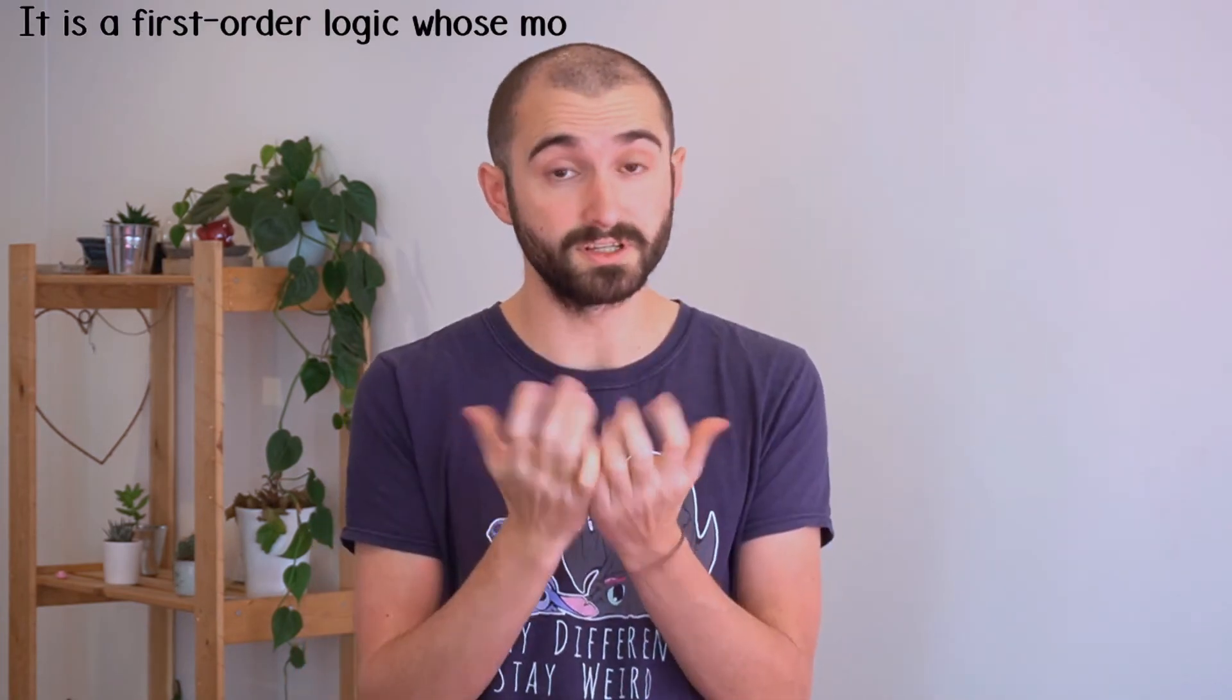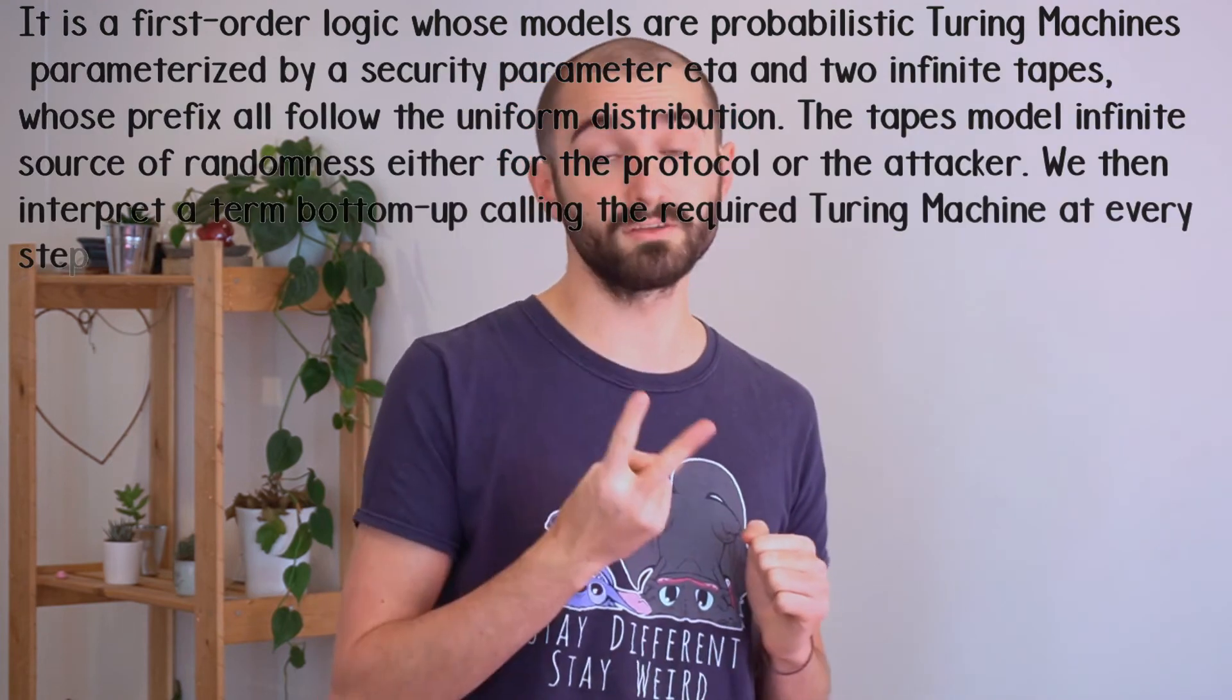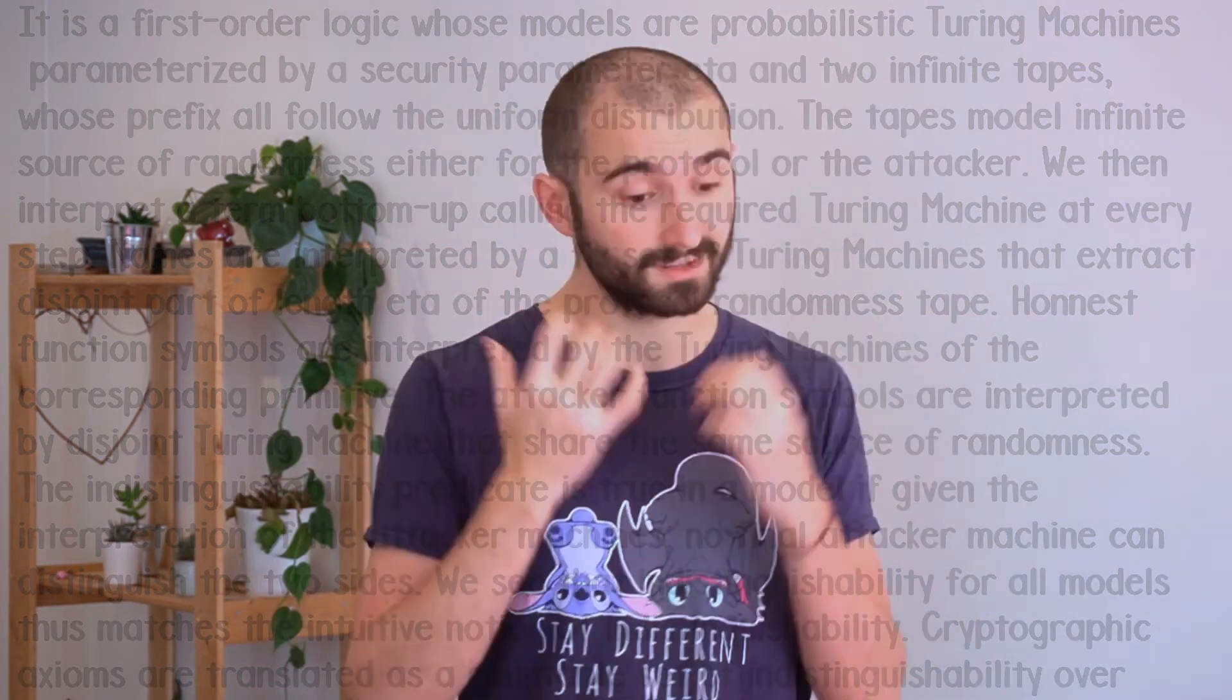Oh, well, you have the big ideas so that you can understand the user interface. Making it so that behind the curtain, it actually gives you computational guarantees is quite a pain. Essentially, you have to see the logic as the first order logic, whose models are probabilistic Turing machines. Okay, let's forget about that. And so that you forgive me, here's the picture of a cute squirrel.